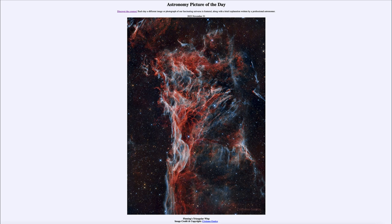A system like our own solar system, which formed about 5 billion years ago, was originally made of material that came from supernovae like this. That material became part of the interstellar medium, forming dark nebulae and dark clouds that would then collapse into future generations of stars, including our own solar system. Much of the material in our bodies — the carbon in our bodies and the oxygen that we breathe — was once part of a supernova like this, many billions of years ago.